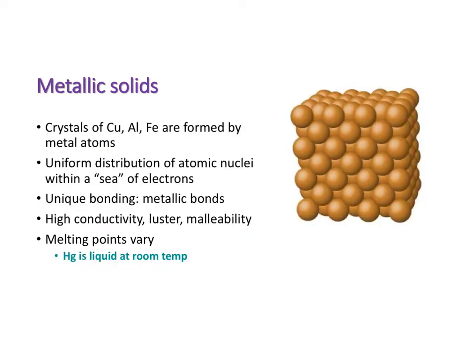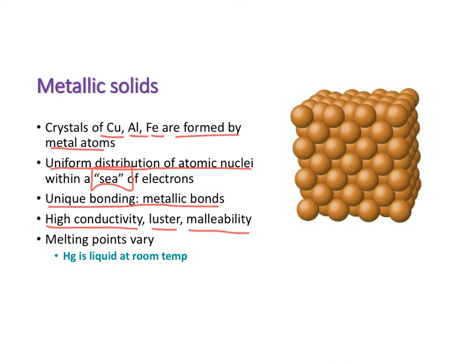We also have metallic solids, which we probably haven't talked about much. Crystals of copper, aluminum, and iron can be formed from pure metal atoms. The way it works is that you have a uniform distribution of their nuclei and their electrons are floating around in what we call a 'sea of electrons.' These are specifically called metallic bonds. They conduct electricity very well, have luster — meaning they're shiny — and are malleable, meaning you can adjust their shape.